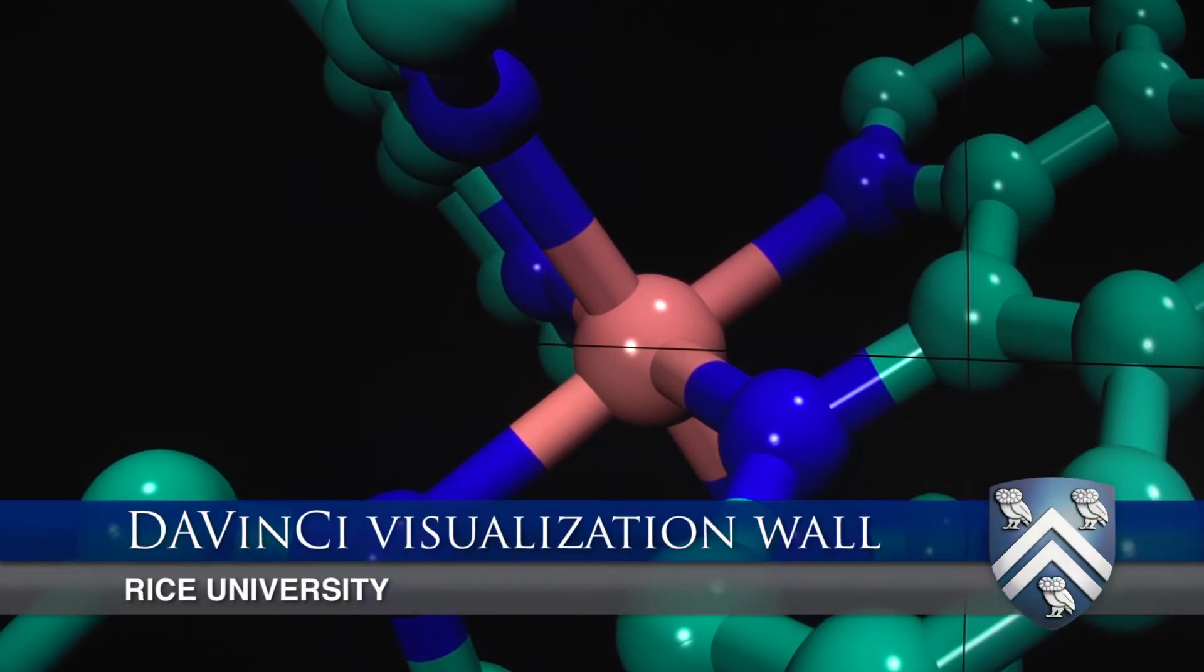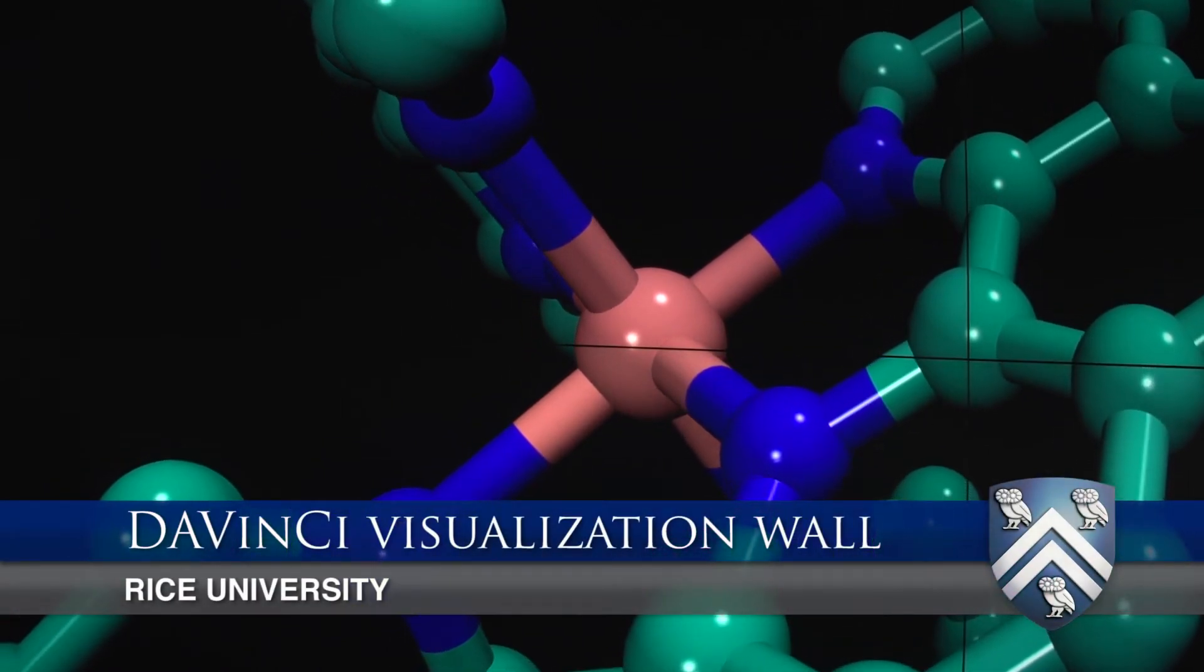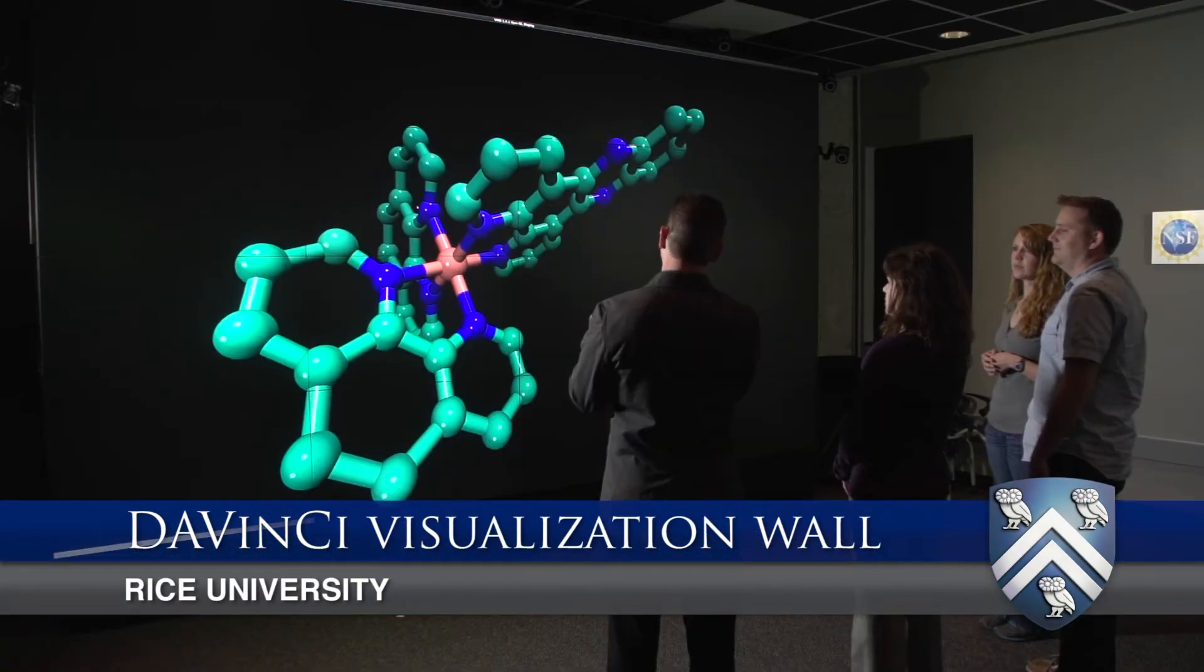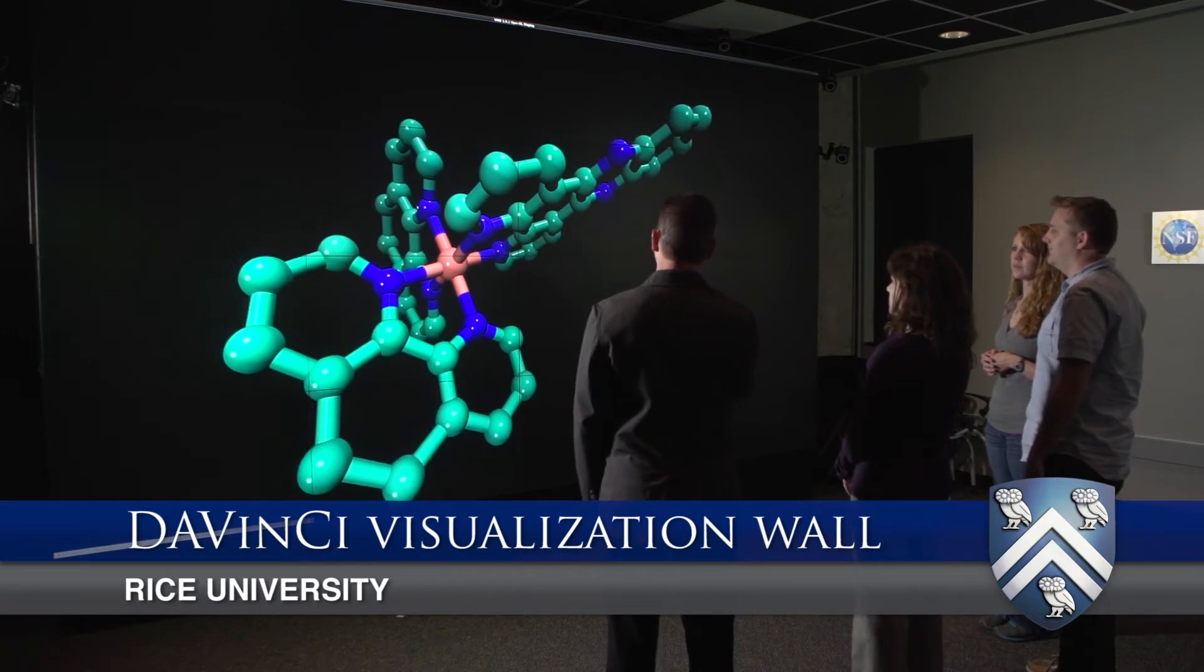At Rice, we've been developing model systems to study Parkinson's, particularly to study aggregation of alpha-synuclein in cells. Our goal is to understand protein aggregation within cells so we can develop therapeutic strategies to prevent accumulation of these aggregates or enhance clearance of aggregates from cells.